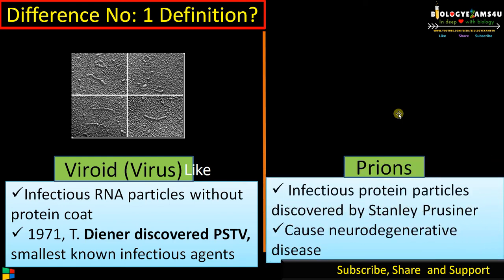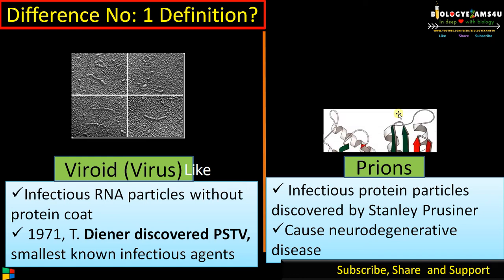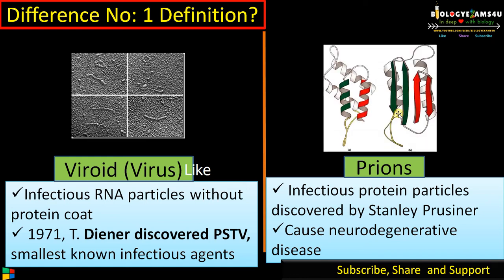Whereas prions are infectious protein particles, discovered by Stanley Prusiner in 1982. Prions cause neurodegenerative diseases. They are actually misfolded proteins.